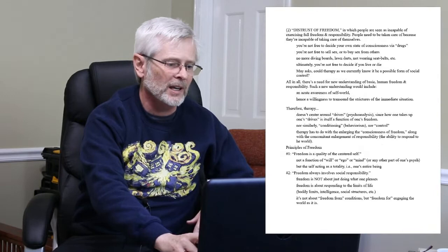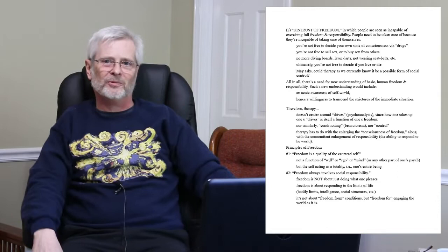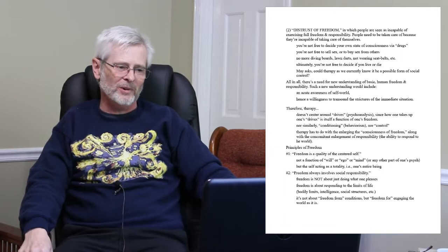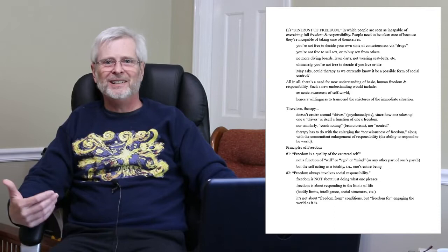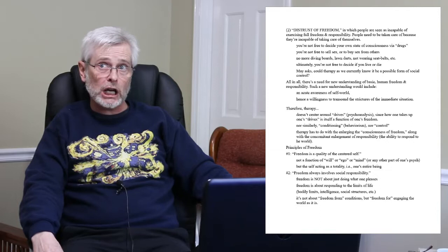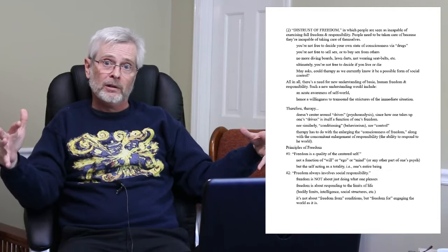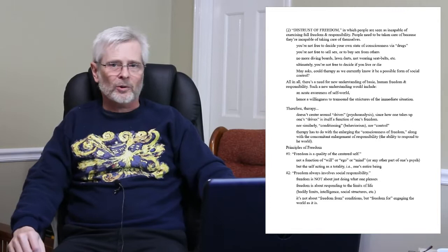The problem, according to Rollo May, is that this impedes social evolution and the betterment of our world. The second distortion is the distrust of freedom — the opposite of the full freedom assumption — in which people are seen as incapable of exercising adult freedom and adult responsibility. People need to be taken care of at some level because we just can't take care of ourselves.